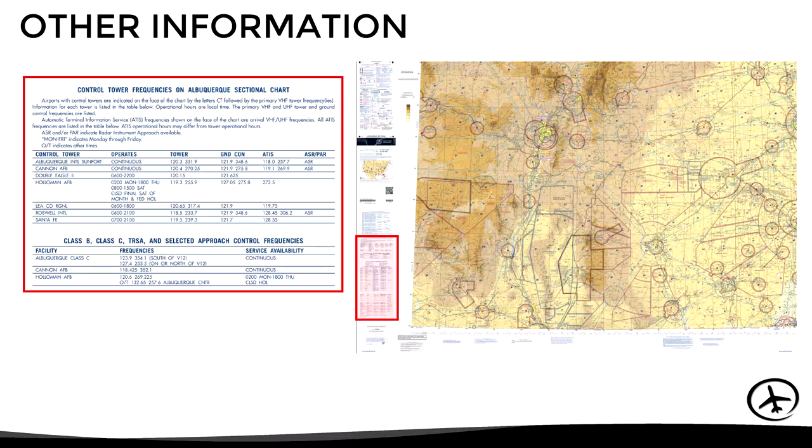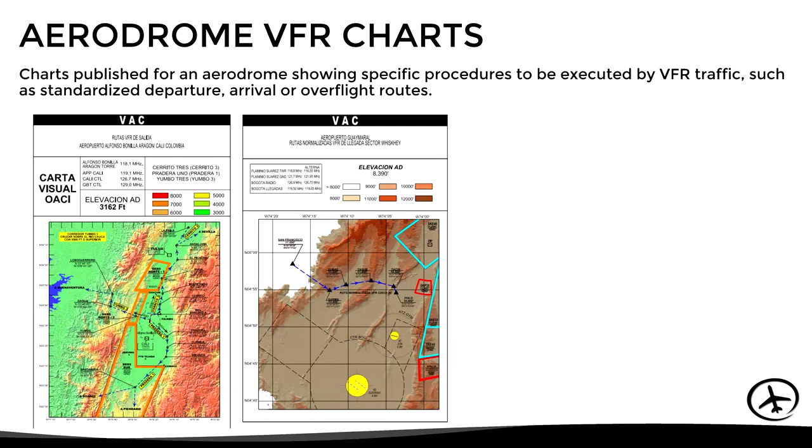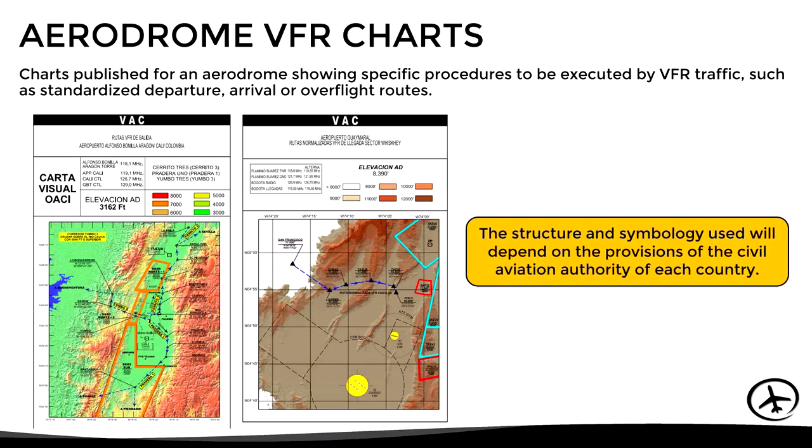So far we have focused on VFR area charts. However, as we said at the beginning, each airport can design its own charts for VFR flight procedures such as standard departure, arrival, or overflight routes. In these charts, the structure and symbology used will depend on the provisions of the civil aviation authority of each country or state, so we will not get into detail on this.